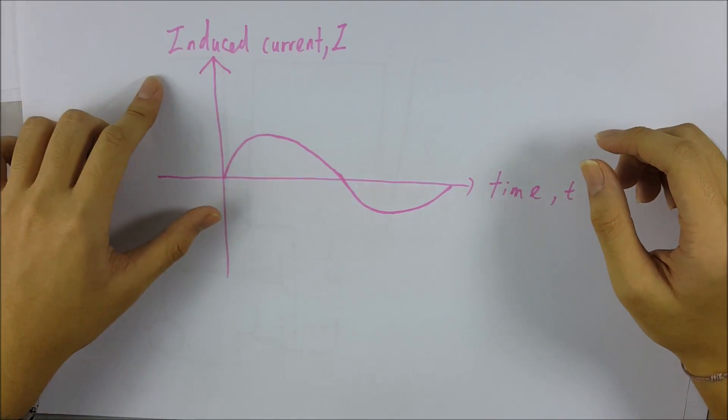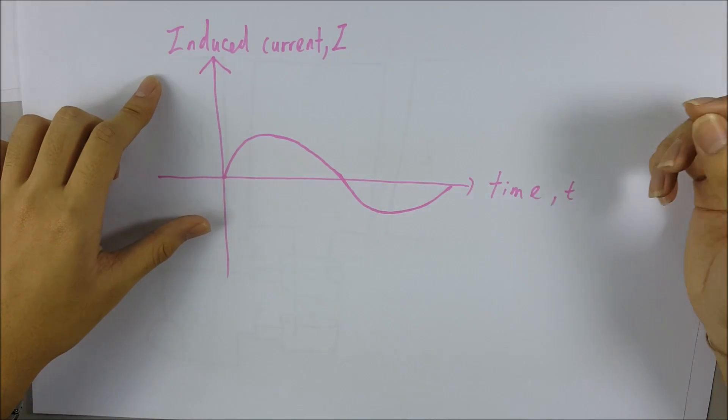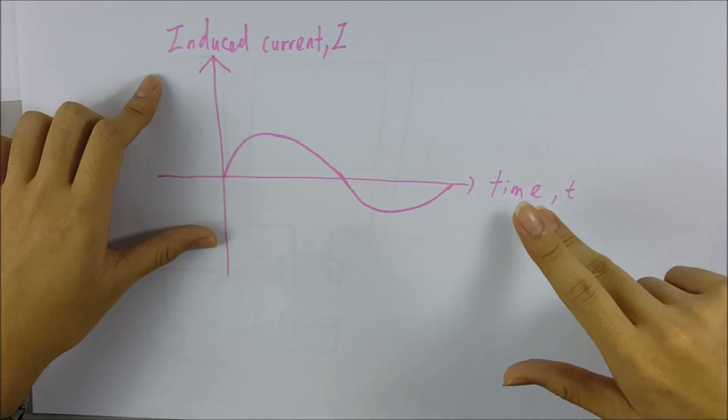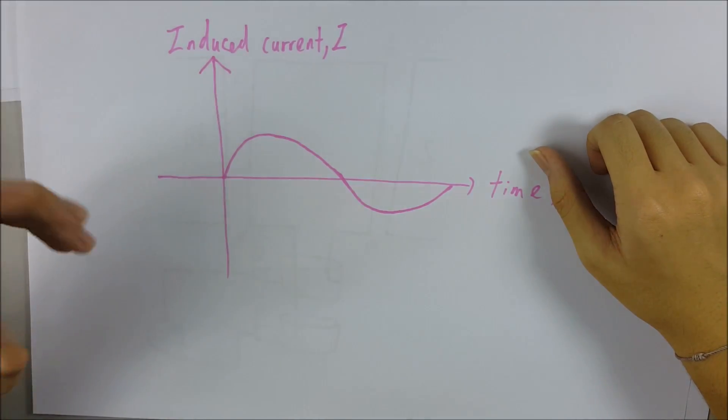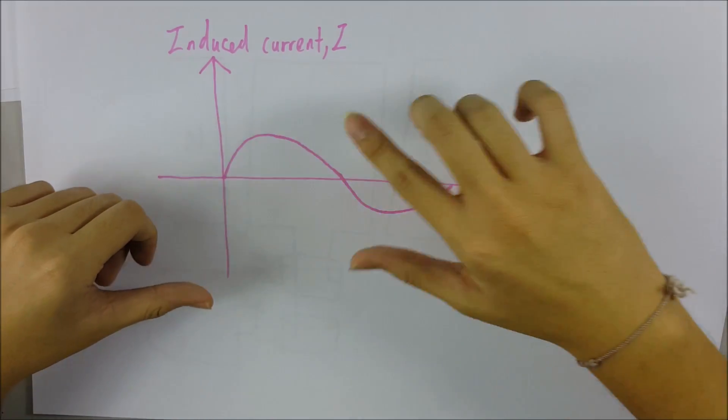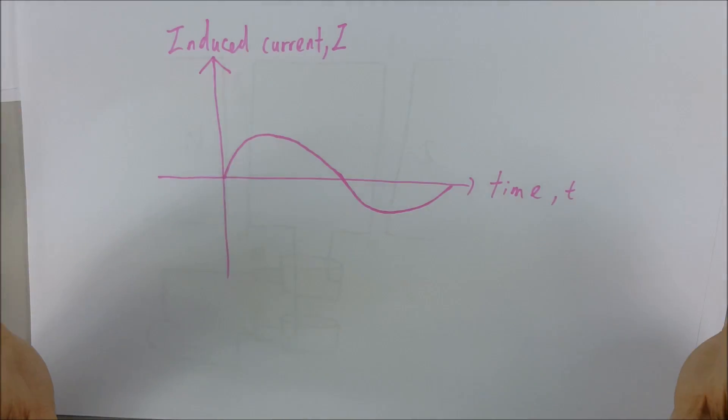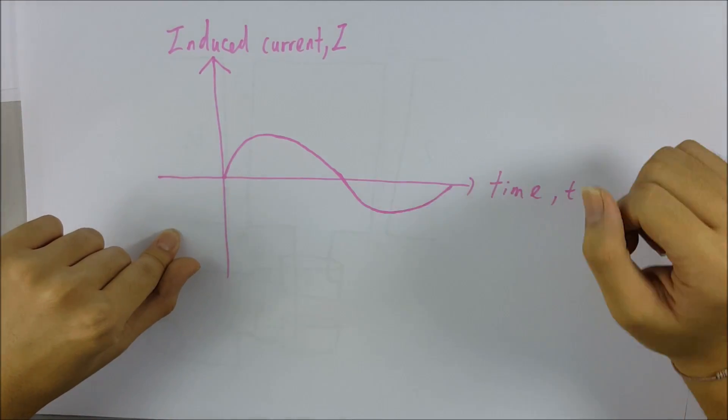We have two axes, which is the induced current, or you can write as the induced EMF, which is in voltage V, and this is the time or period. Different from the DC generator which is only in one direction, the AC generator will move in two directions, so the graph will be a complete sine curve.